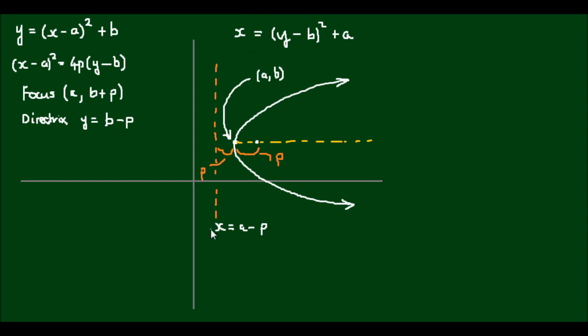So it follows then that the conic form of the equation is going to be written as (y - b)² equals 4p times (x - a). And the focus point is going to be at (a + p) for the x coordinate, so the x coordinate of the vertex plus the distance p. And the y coordinate of the focus is still going to be just the y coordinate of the vertex, b.